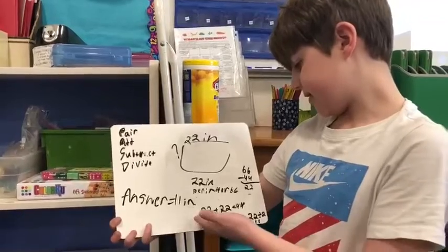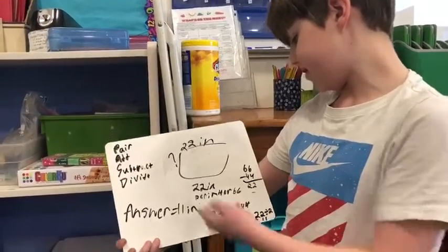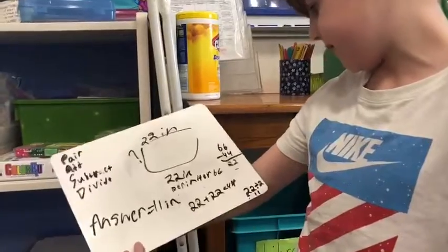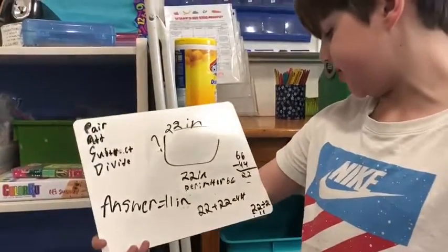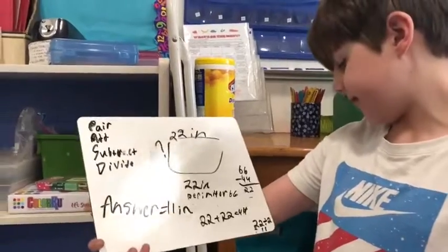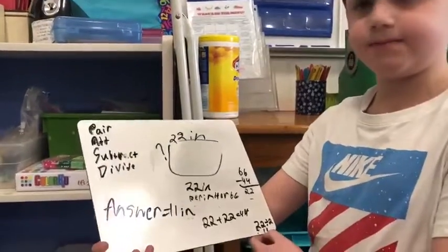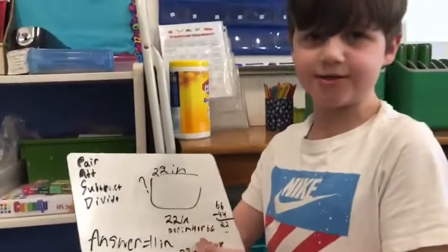Then I add 22 plus 22, which is 44. And I see the perimeter is 66. So I subtract 44 from 66, which equals 22. And 22 divided by 2 equals 11. Your answer is 11 inches.